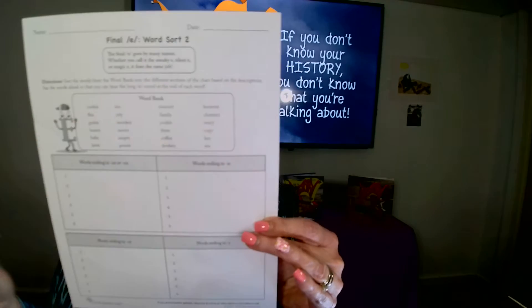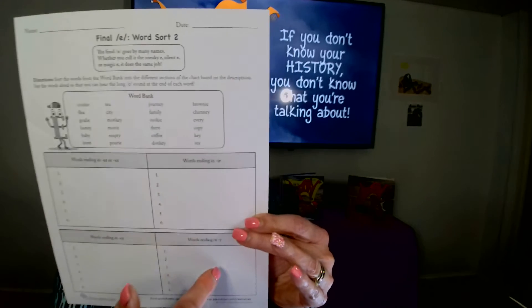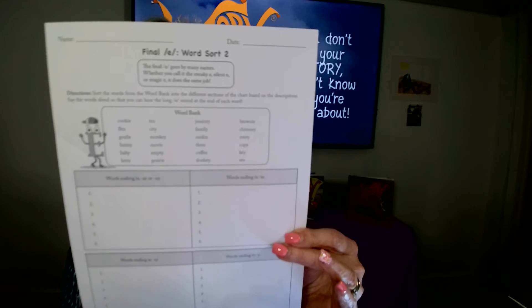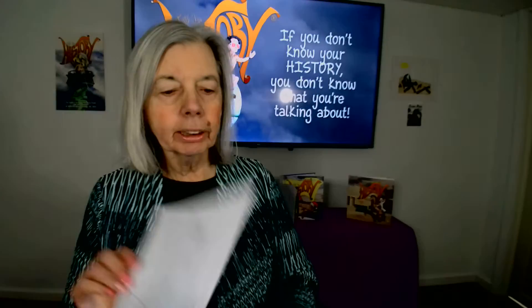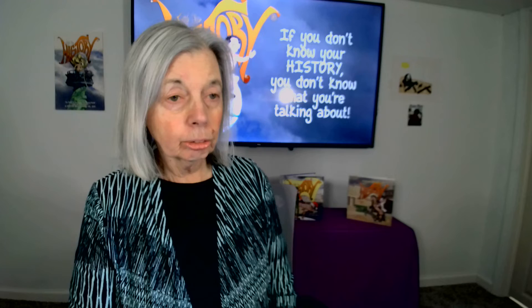There is a word bank with final E words, and there are four groups of different spellings with that final E sound. You're going to ask your student to read carefully aloud each word in the word bank one at a time, then ask the student to put the word in the correct spelling group in the proper word bank.